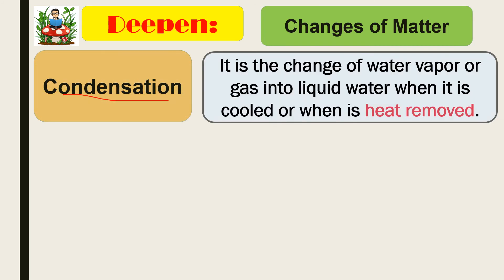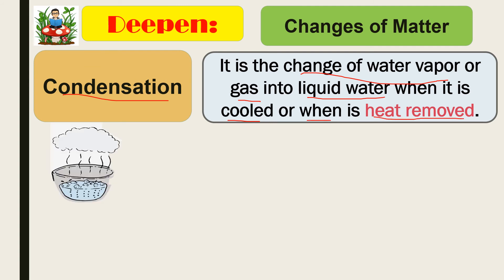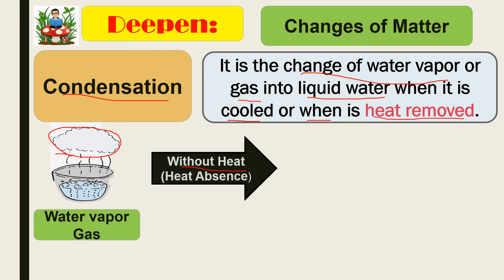The counterpart of evaporation is condensation. Condensation is the change of water vapor or gas into liquid water when it is cooled or when heat is removed. For example, steam or gas — if there is no heat, those water vapor will change into liquid. As I mentioned in the water cycle, if the clouds cool, they will fill with water and eventually turn into precipitation, or rain.